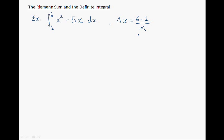Delta x, which is the width of our rectangles, is 6, the upper boundary, minus 1, the lower boundary, divided by n. So we have 5 over n.